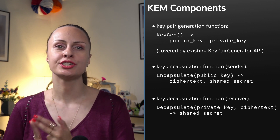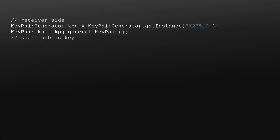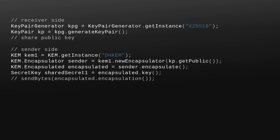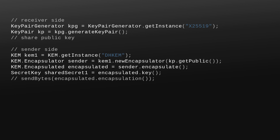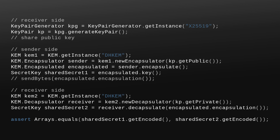When using a KEM, the receiver would run generateKeyPair and share the public key. The sender takes this public key, runs encapsulate, keeps the generated secret to itself, and sends the encapsulation to the receiver. The receiver runs decapsulate over this encapsulation and obtains the same shared secret that the sender holds. Even if an attacker would see the encapsulation, they wouldn't be able to infer the secret value.